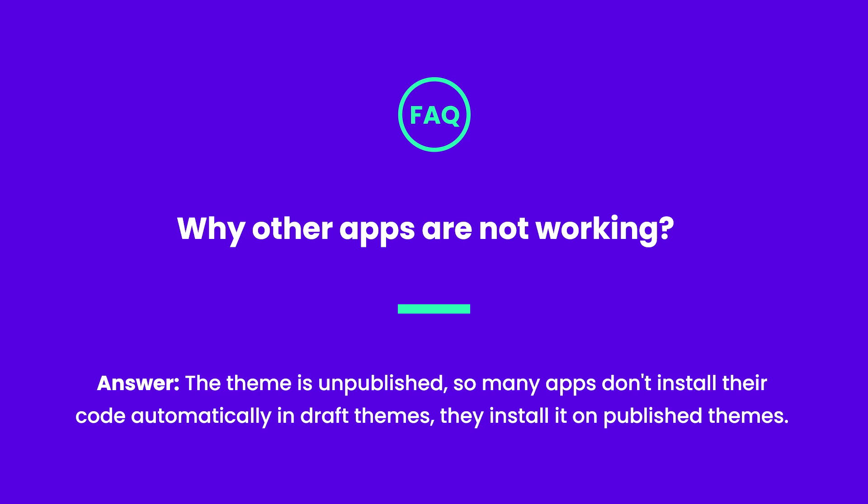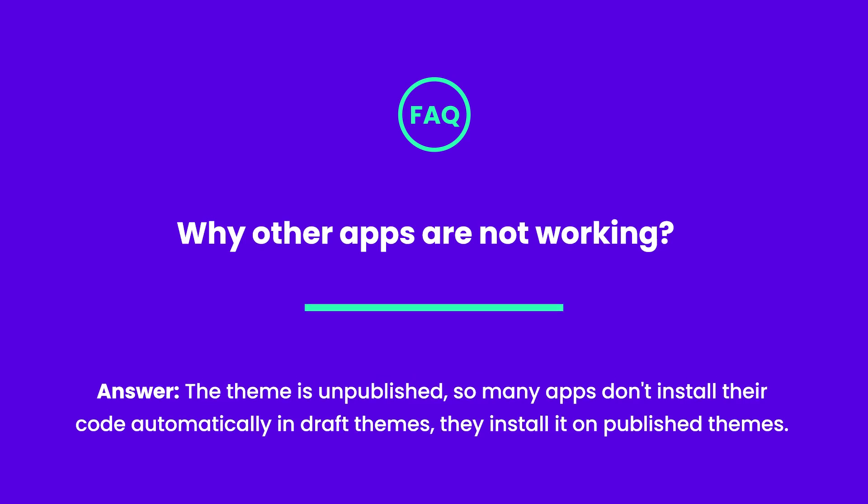Most likely when you publish it, the third-party code will install automatically. This is especially true for review apps. Some apps have the option to install their code in draft themes, but you have to check that option in the respective app.